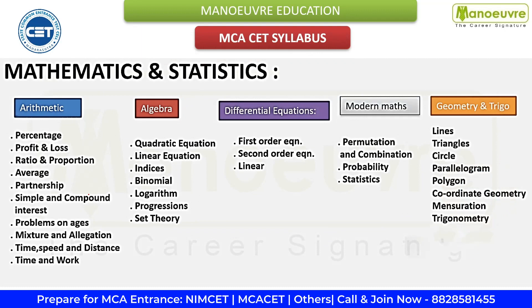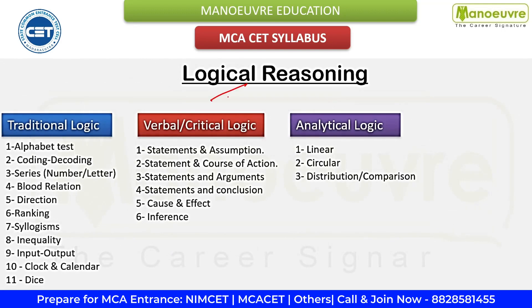Section one is Mathematics and Statistics. This section consists of arithmetic, algebra, differential equations, modern maths, geometry and trigonometry. This section usually tests your knowledge of topics such as algebra, probability, statistics, etc. Focus on building your concepts by referring to Manure Education MCA entrance preparation books and practice solving problems. Also try to solve as many mock tests as possible to get an idea of the exam pattern.